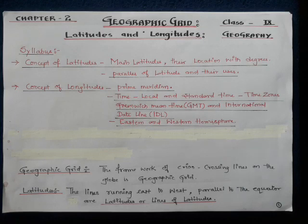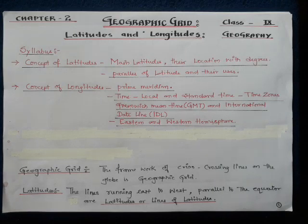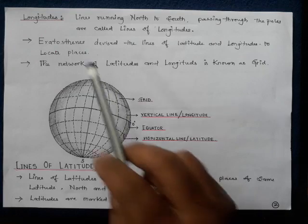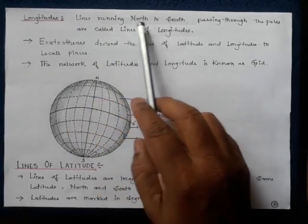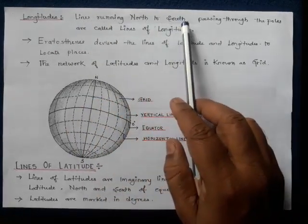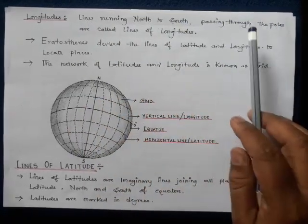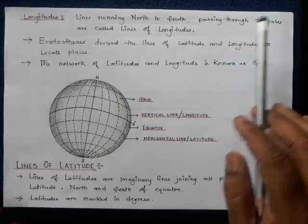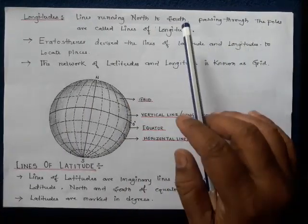There can be a one-mark question in the board exam. Latitudes are the lines running east to west, parallel to the equator. Longitudes are lines running north to south, passing through the poles, and are called the lines of longitudes.